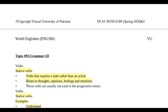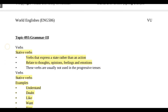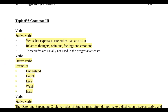یہاں Grammar 3 ہے جس میں ہم verbs پڑھیں گے۔ Verb وہ ہوتا ہے جو کوئی action ظاہر کرے، لیکن verb کی آگے بھی types ہوتی ہیں۔ Stative verb وہ ہوتا ہے جو کسی state یا حالت کو express کرے، نہ کہ action کو۔ Dynamic verb وہ ہوتا ہے جس میں action ہو، اور stative verb کسی feeling، emotion، یا thought کو ظاہر کرے۔ مثلاً understand، doubt، like، want، hate — یہ سب stative verbs ہیں۔